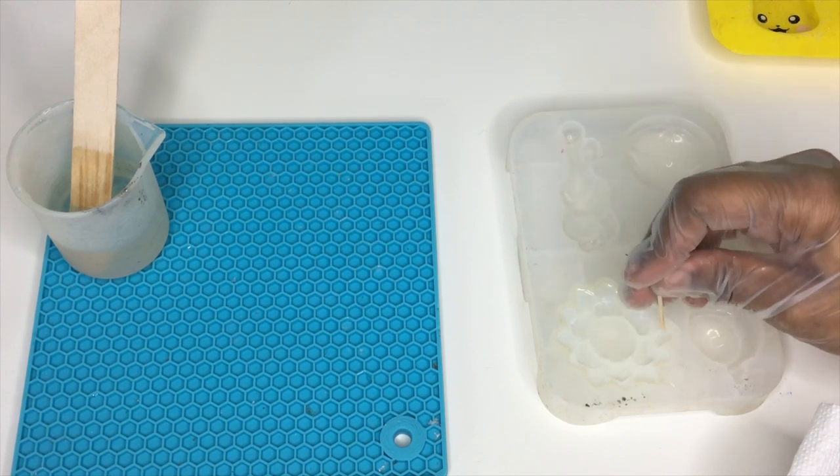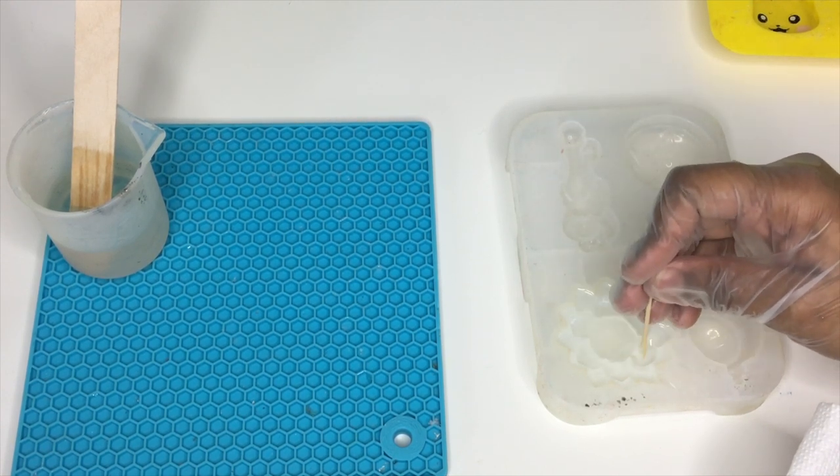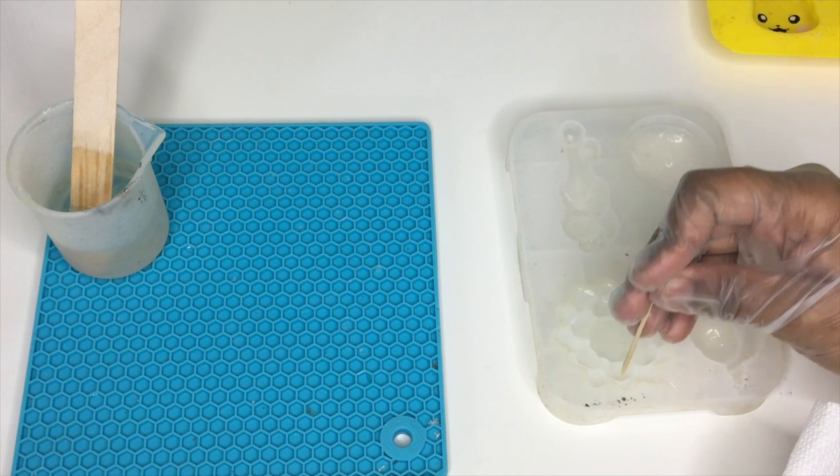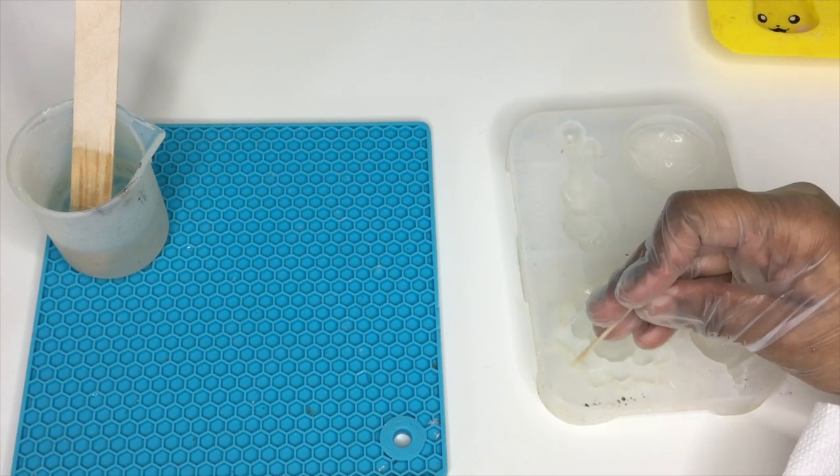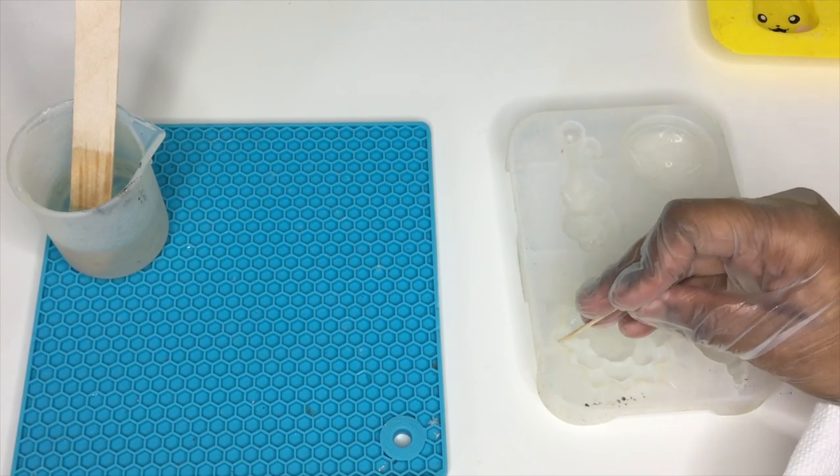So now I'm taking a toothpick to get rid of any debris as well as popping any bubbles and bringing some to the top so that I can use my blowtorch to pop them.